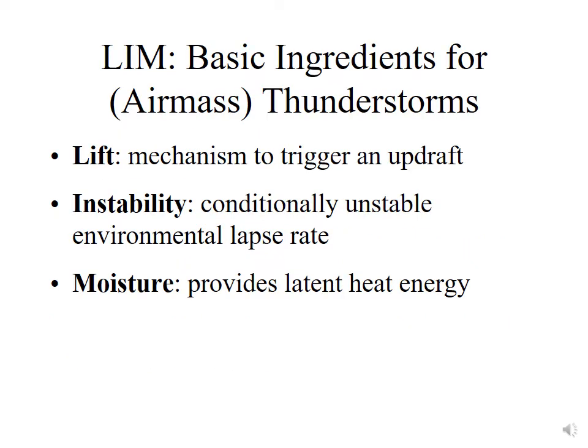One thing that all thunderstorms have in common is that they have three basic ingredients, and the mnemonic that we use is LIM — L-I-M. The first is lift, which is a mechanism to trigger the updraft. Then we need instability, which is typically a conditionally unstable environmental lapse rate, and then we need moisture, because moisture provides the energy for these systems. If the environment is missing one of these three basic ingredients, there will be no chance for a thunderstorm on that particular day. We have to have all three.